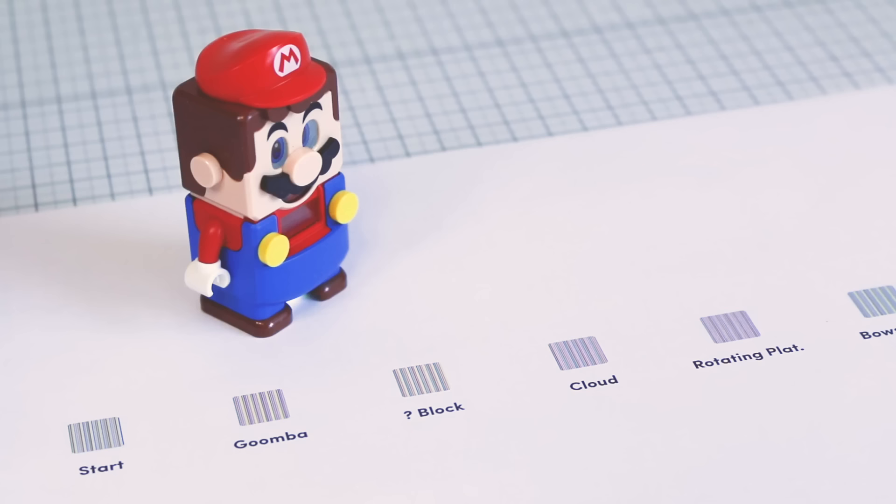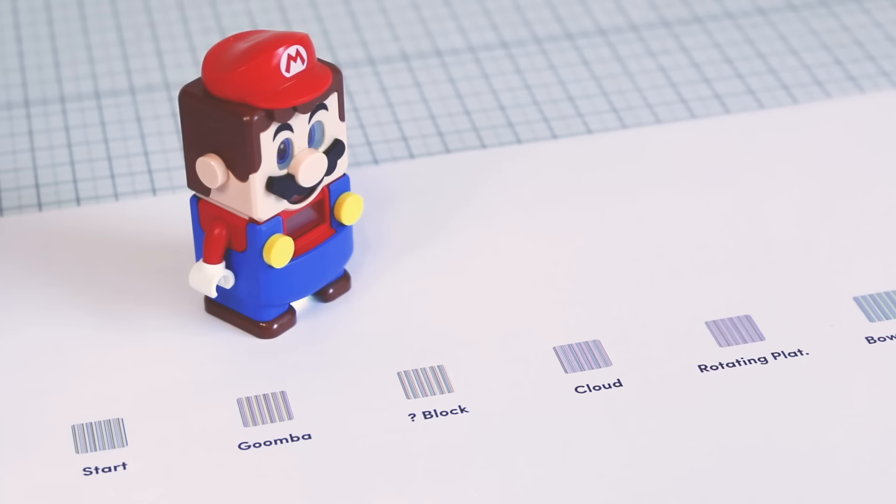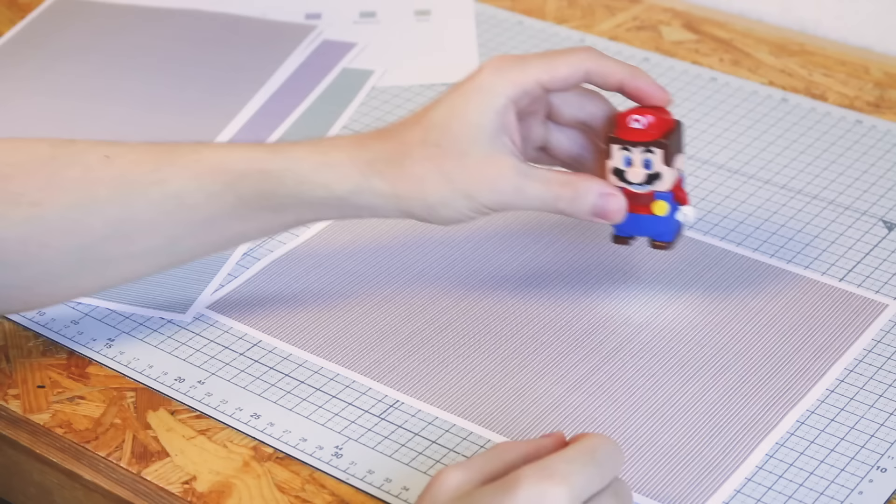So now that we've managed to counterfeit an entire course, how can we take it further? Well, it turns out these barcodes don't actually need to be contained within this little square. In fact, you can supersize them and Mario will react wherever you place them.